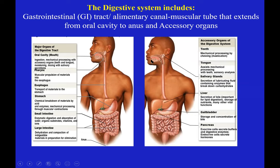Accessory organs that aid digestion include the tongue, teeth, and salivary glands in the oral cavity. The liver makes bile, which plays a huge role in fat digestion. The gallbladder stores and concentrates the bile. The pancreas is both an endocrine organ and an exocrine organ — it makes insulin and glucagon for blood sugar homeostasis, and also makes a lot of digestive enzymes as an exocrine gland.